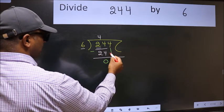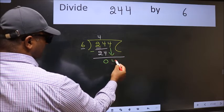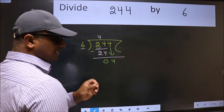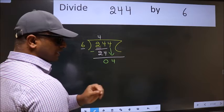After this, bring down the next number. So 4 down. After this step, the mistake happens. And the mistake is this.